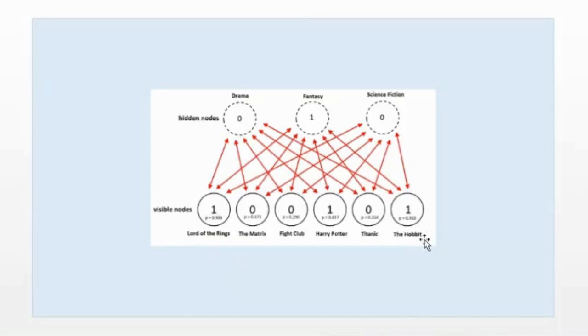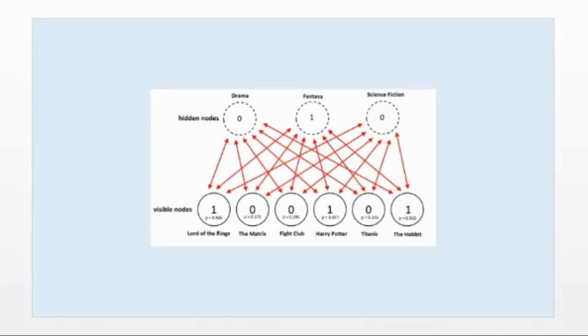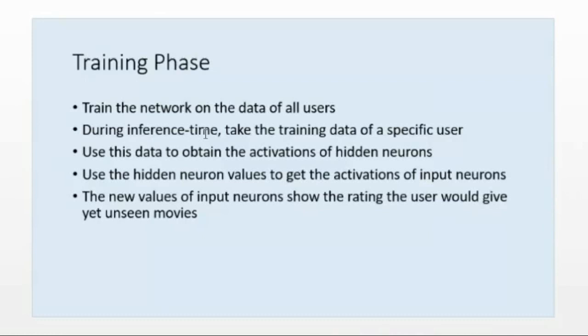The quality values are dependent on a Bernoulli distribution. For full numerical derivations, you would need to refer to the original paper from 2007. There are also extension papers regarding RBMs for collaborative filtering.